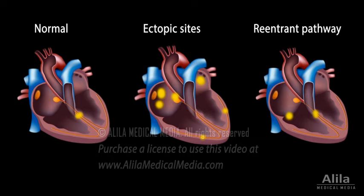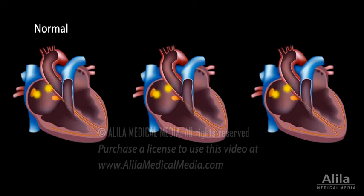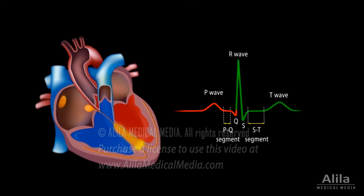Cardioversion depolarizes the bulk of cardiac muscles simultaneously, disrupting the abnormal electrical circuits, allowing the heart's pacemaker to regain control and restore normal rhythms.